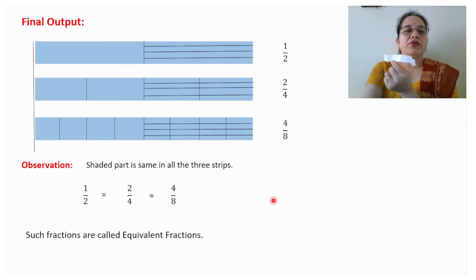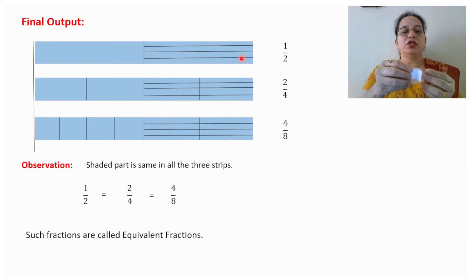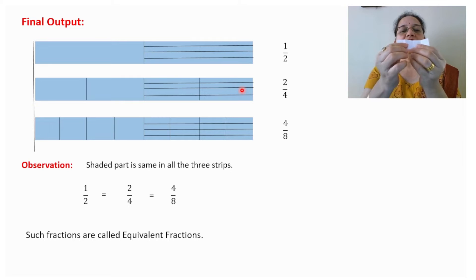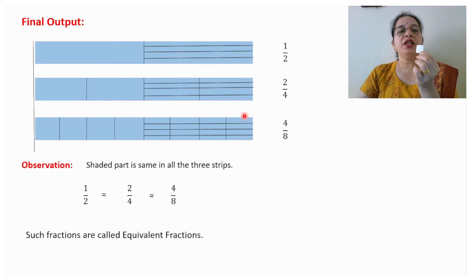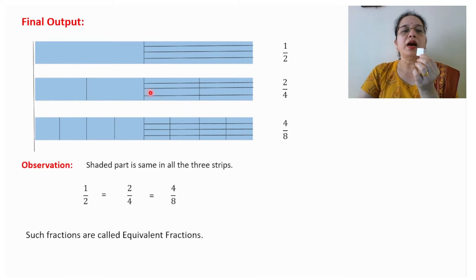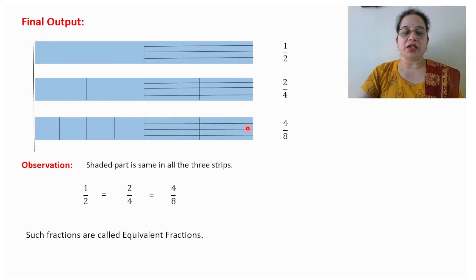This is our final output. The first strip was folded in two parts. The next one was folded again into four parts. The next one was folded again into eight parts. Every time we are shading the half portion: half of two is one part, half of four is two parts, half of eight is four parts. So here I have shaded these four parts.